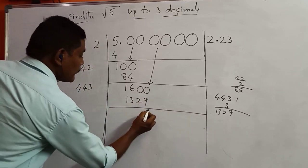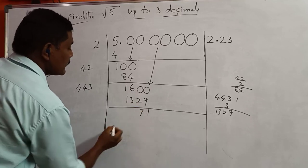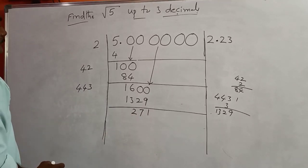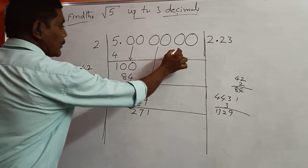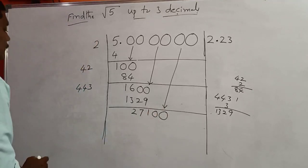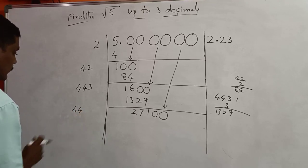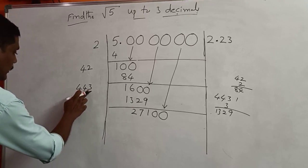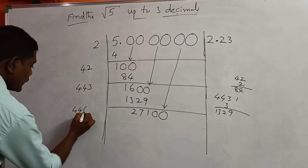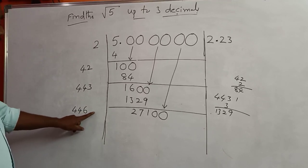Now write down the last pair of zeros making 27100. Double the last digit 3: 3 plus 3 equals 6. The divisor becomes 4460. What number to write? Multiply and check. If you take 5: 4465×5=22325.